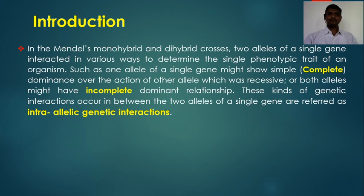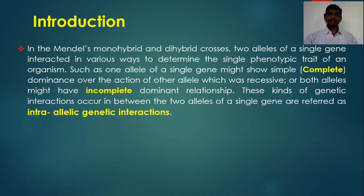In the monohybrid cross, two alleles of a single gene interact in various ways to determine a single phenotypic trait. One allele might show simple dominance over the other recessive allele. In a cross between tall and dwarf plants, only tallness appears in the F1 generation. That allele we call the dominant allele — it suppresses the effect of the other allele, which we call recessive.